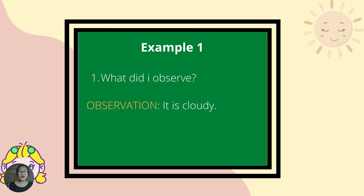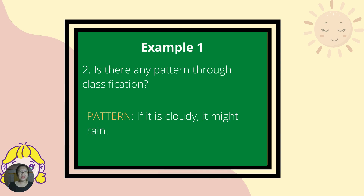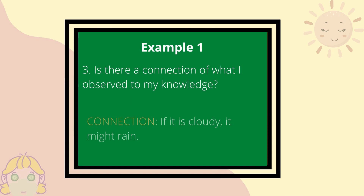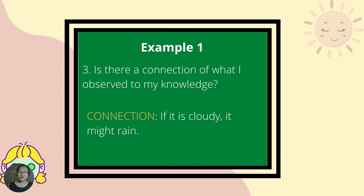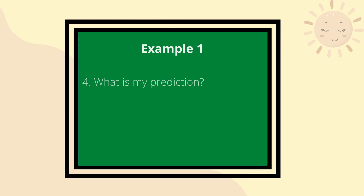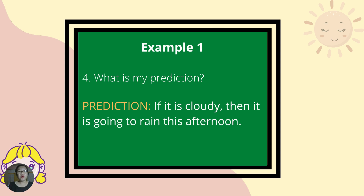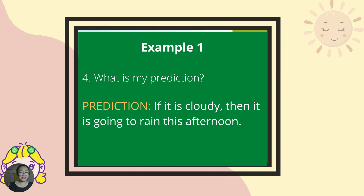Let's take a look at this example. What did I observe? I observe that it is cloudy. Is there any pattern through classification? Yes — if it is cloudy, it might rain. Is there a connection of what I observe to my knowledge? Yes, if it is cloudy, it might rain. So what is my prediction? If it is cloudy, then it is going to rain this afternoon.